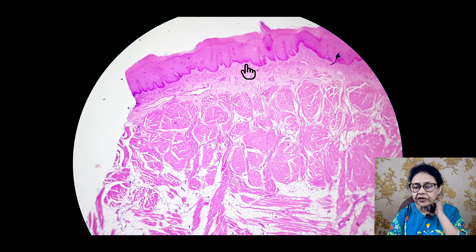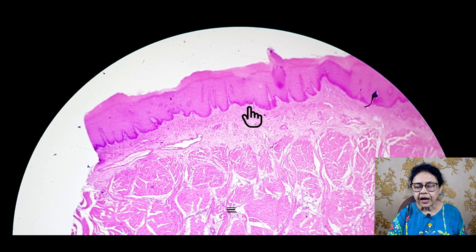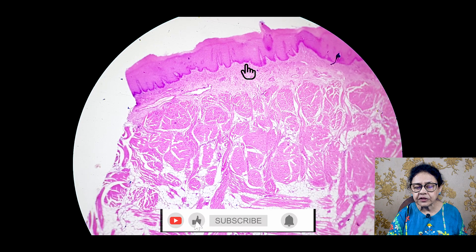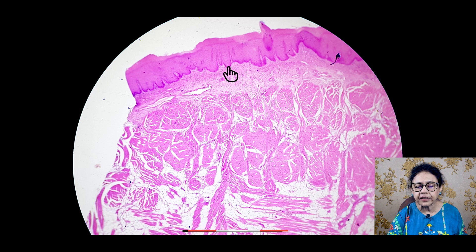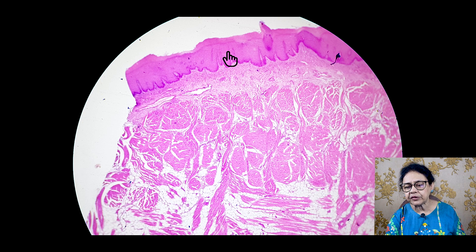Why is there stratified squamous epithelium? Because when you take rough food, part of the epithelium is damaged in the superficial layer, and new cells coming from the basal layer occupy this region. So always the basal layer in case of stratified squamous is dark. This is the characteristic feature of the stratified epithelium.